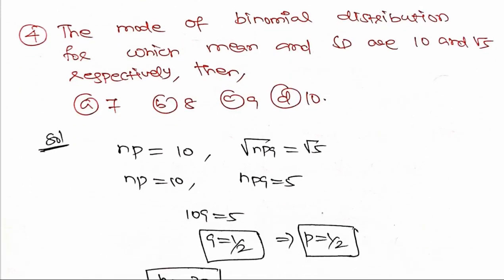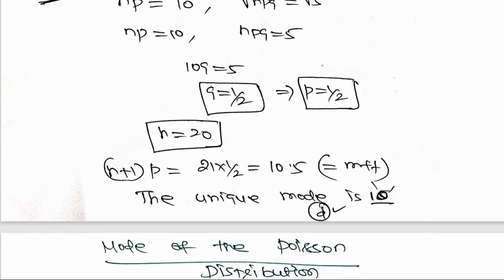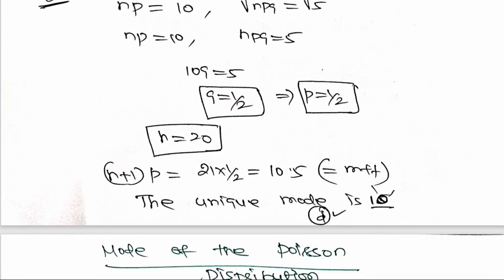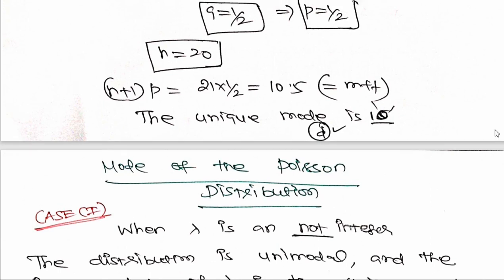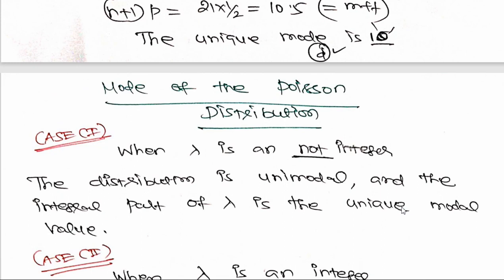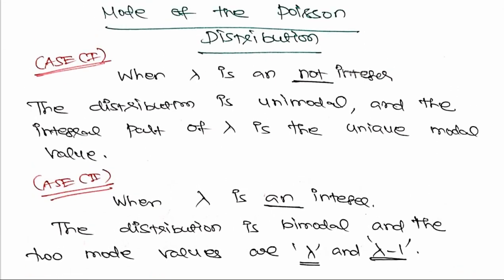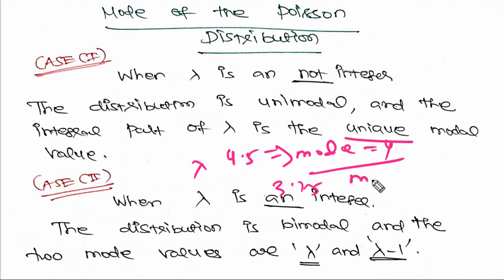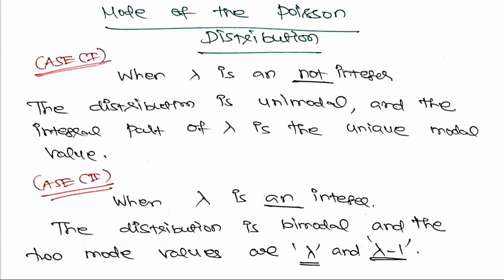The mode of a binomial distribution uses mean np and variance npq. For the Poisson distribution, n+1 times p becomes λ. When λ is not an integer, the unique mode is the integral part of λ. For example, if λ = 4.5 or 3.75, the mode is 4 or 3 respectively.